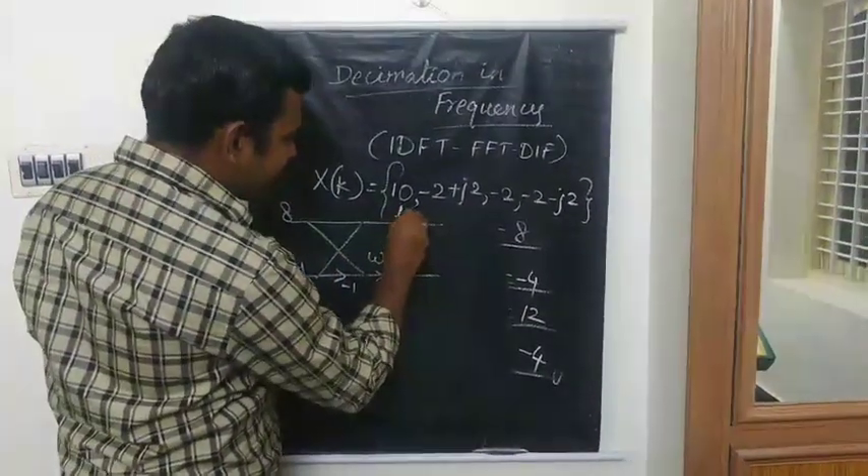First consider only first two inputs. Here the twiddle factor is W4^0 that is 1. So 8 and -4, here we are having 4. Then 8 plus 4 - this becomes +4. -4 into -1 is +4, so here you are getting 8+4=12.